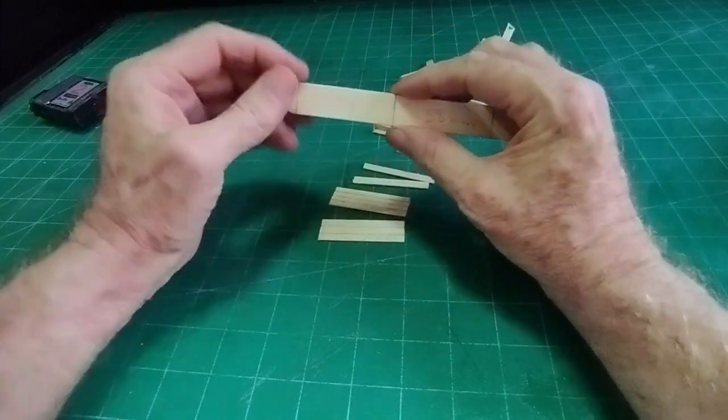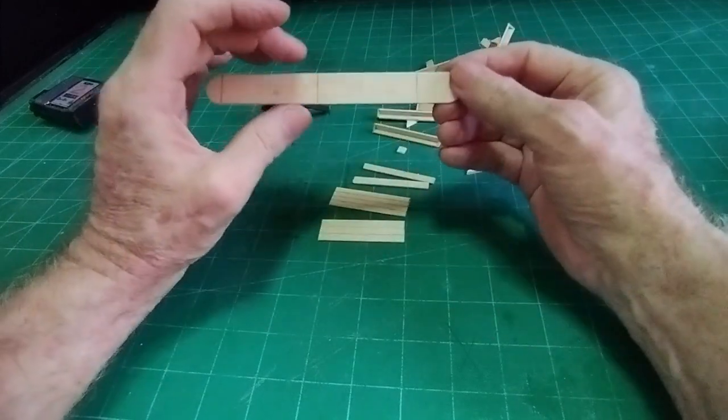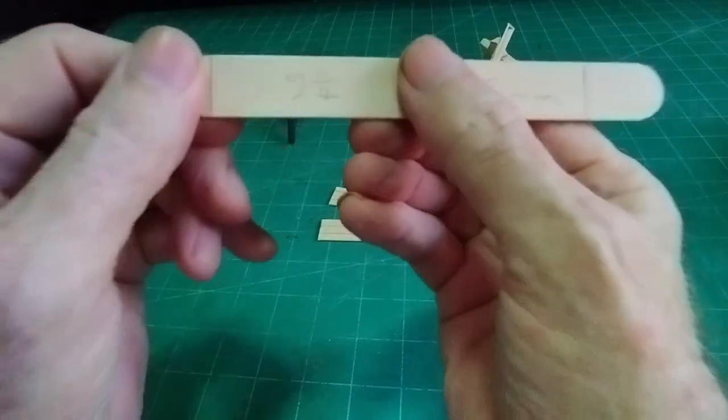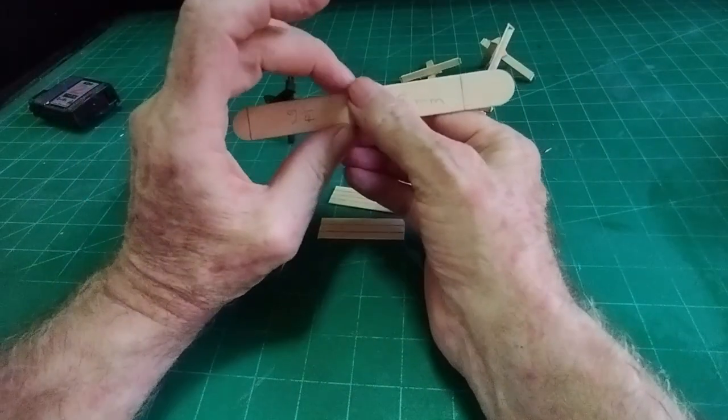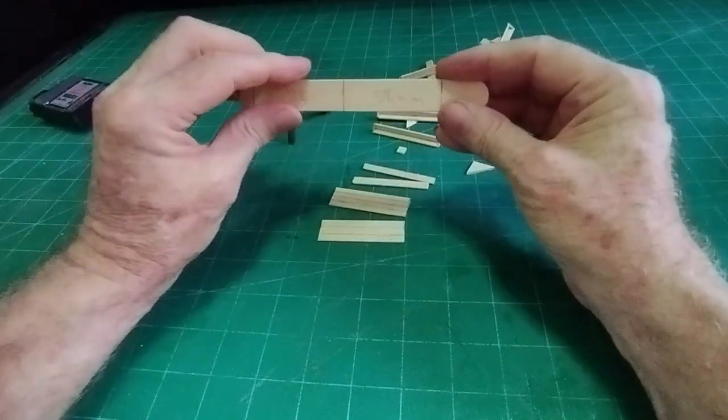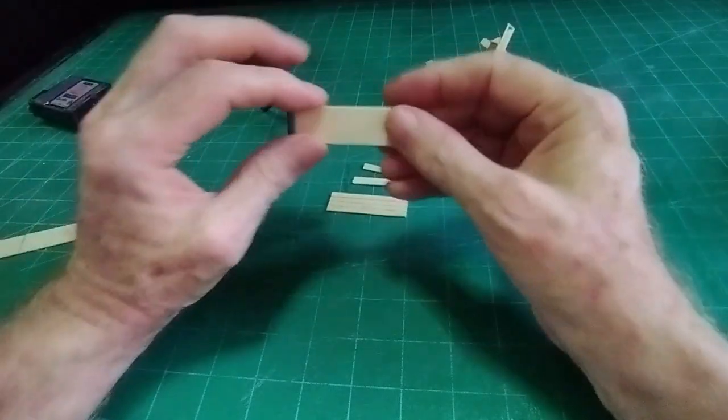I'm going to use these lollipop sticks or popsicle sticks. I prefer these wider versions you can normally get from hobby shops or stationers. Cut the round bit off on the end and then cut to two and a quarter inches long, that's the same as 58 millimeters.